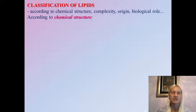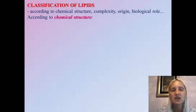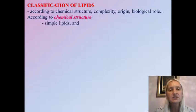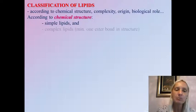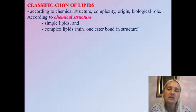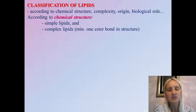How can lipids be classified? They can be classified according to chemical structure, complexity, origin, or biological role. I have chosen here to give you the classification according to chemical structure, which I find the most illustrative of all. According to chemical structure, all lipids can be classified in two groups: simple lipids and complex lipids. Some authors say that complex lipids are those lipid molecules which contain at minimum one ester bond in the structure, and there is a reason for that which we will see shortly.